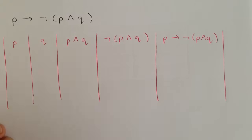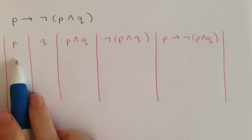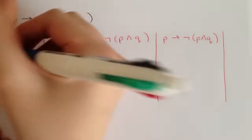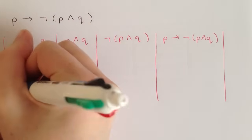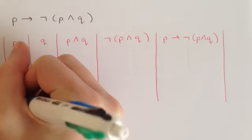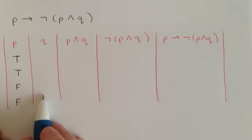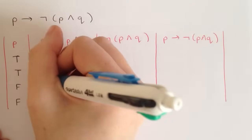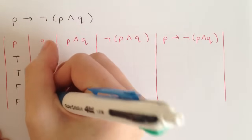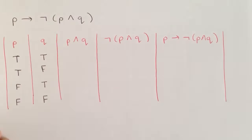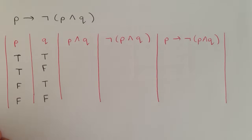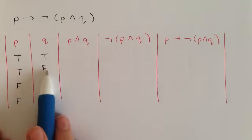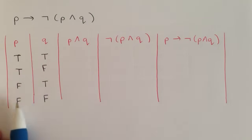How we start is by going into the very first column — nice and easy — you just go true, true, false, false. Head over to the next column and we go true, false, true, false. That way we've got every possible combination: true-true, true-false, false-true, false-false.